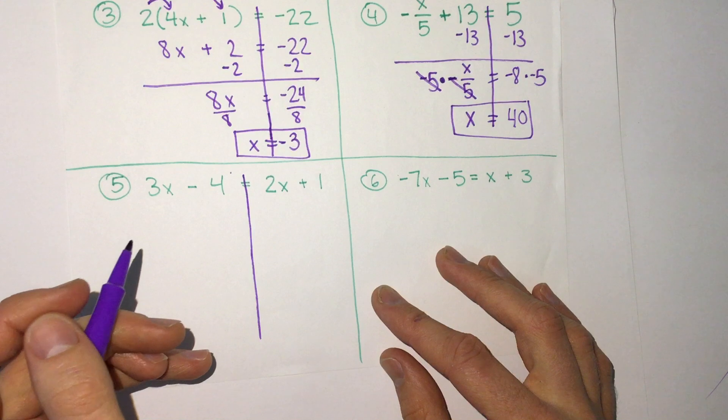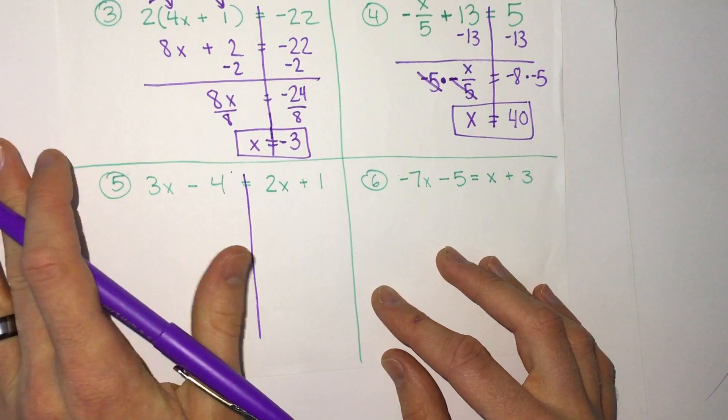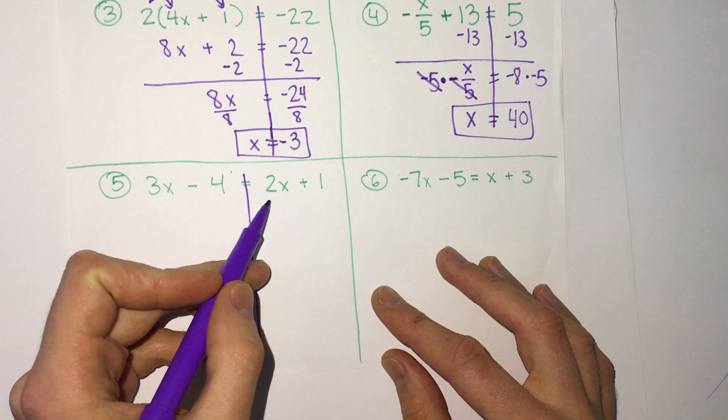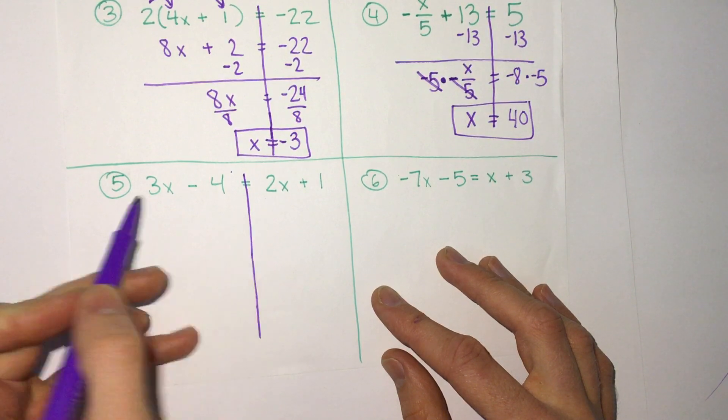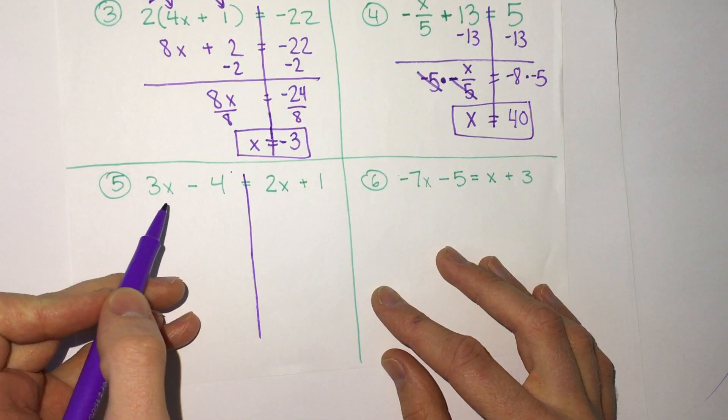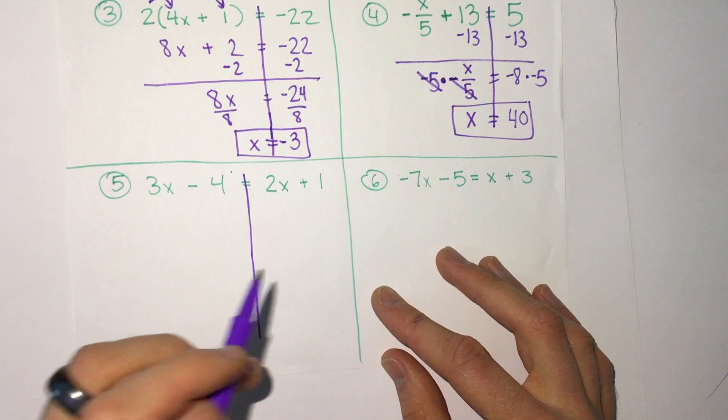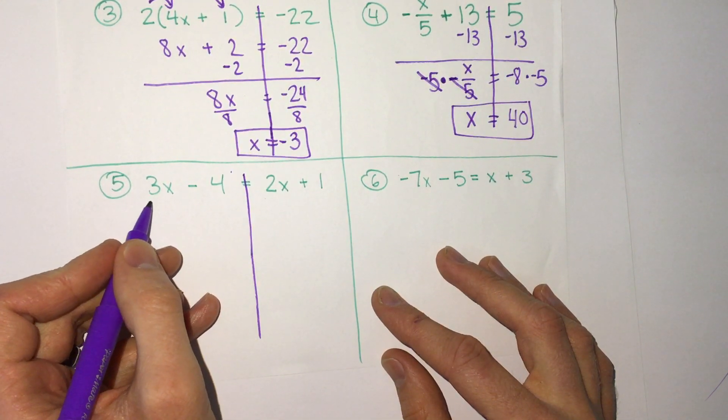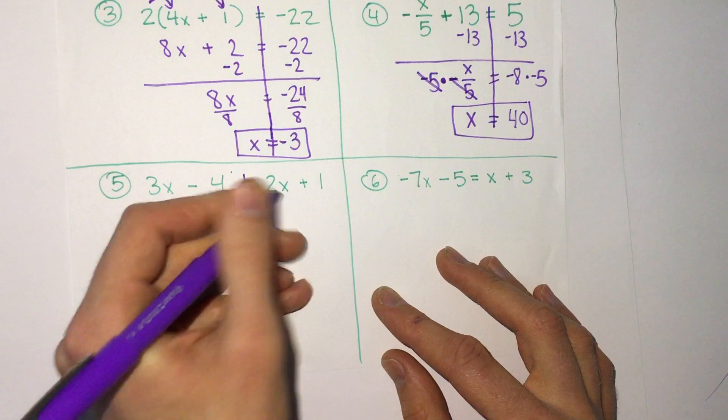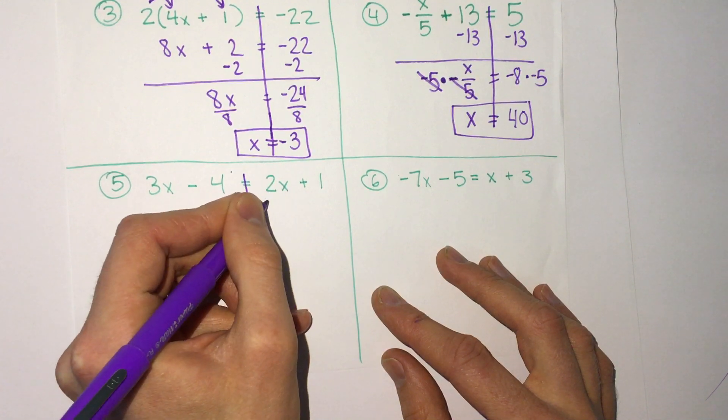So the first thing we want to do is we need to get x's just on one side. I prefer making it so that wherever we are left with x, we have it positive and not negative. So 3x, we would subtract 3x, but then we'd have negative here. The other one we can do, if we subtract 2x here,